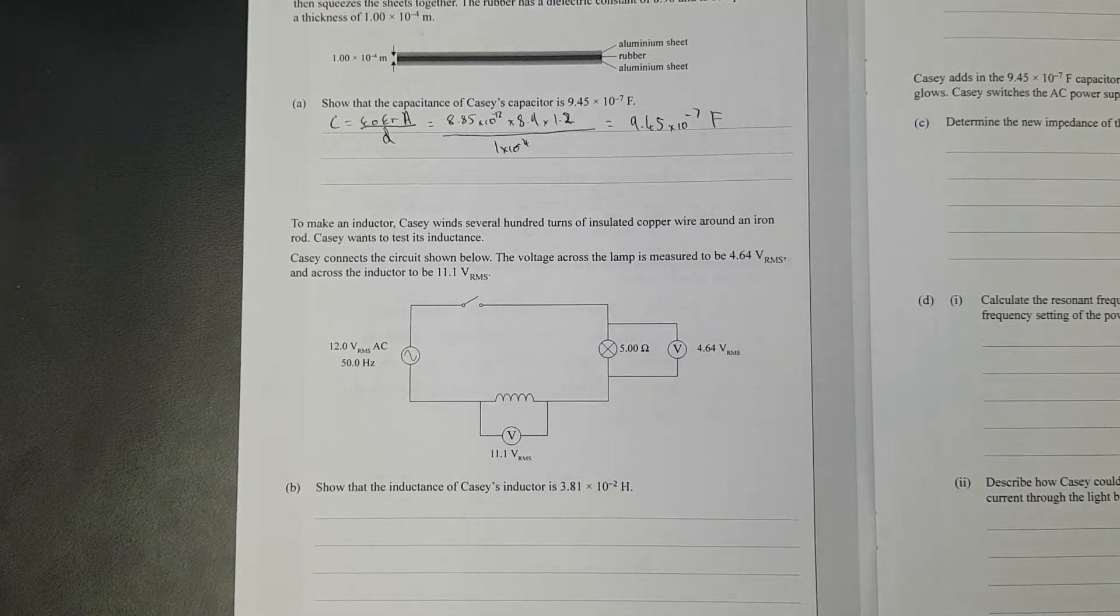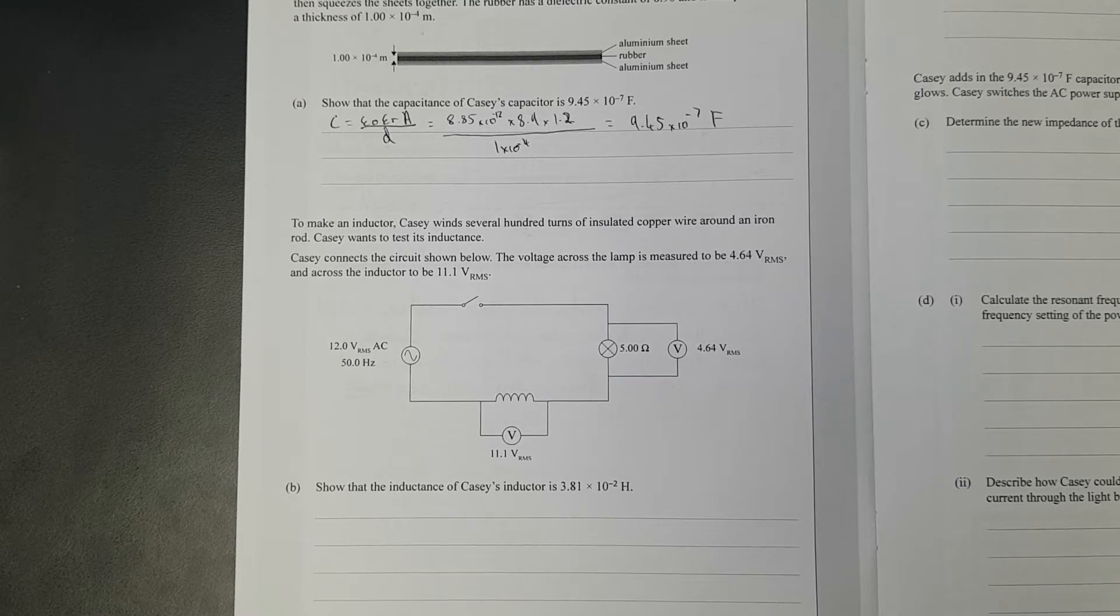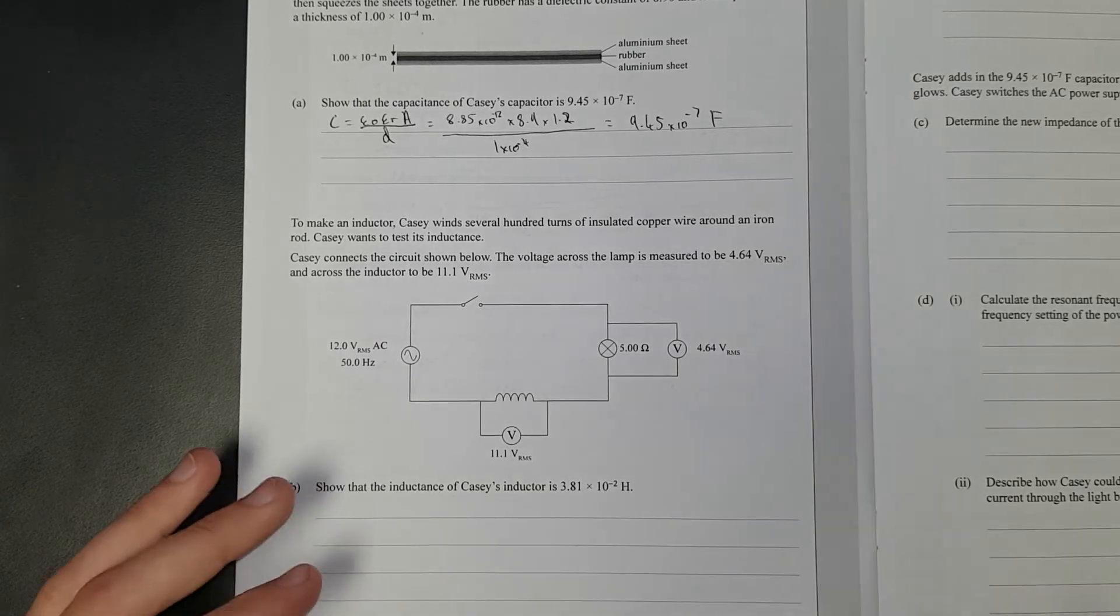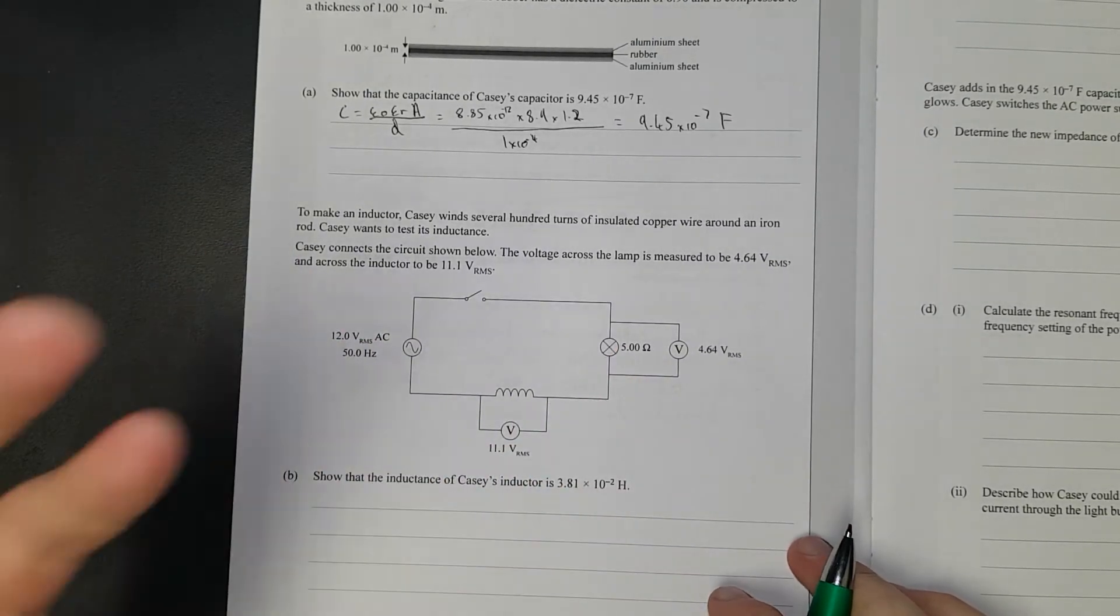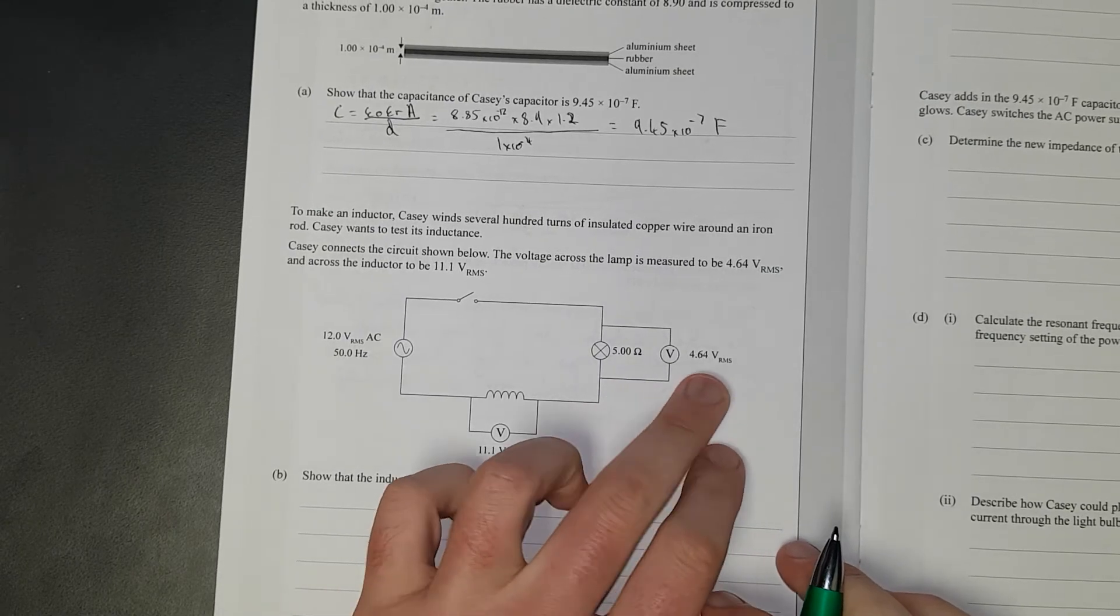To make an inductor, KC wound several hundred turns of insulated copper wire around an iron rod. KC wants to test this inductance and connects the circuit below. The voltage across the lamp is 4.64 volts RMS. The voltage across the inductor is 11.1 volts RMS. Show that the inductance in the inductor is 3.81 times 10 to the negative 2 henries.